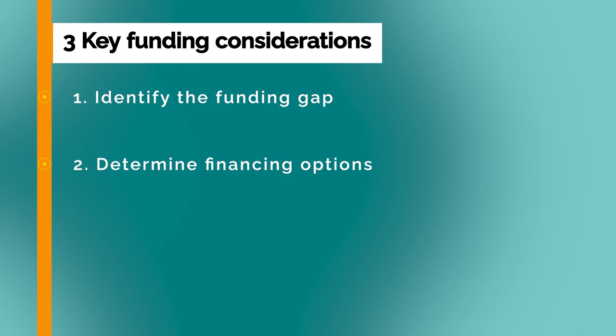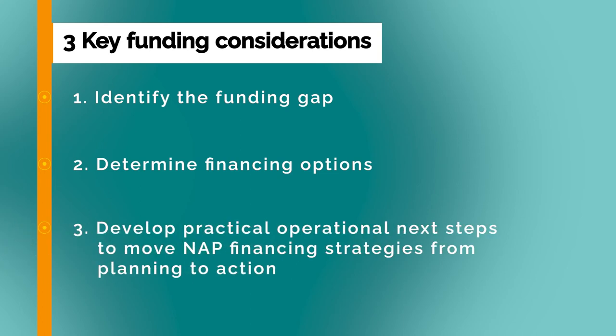Number two, determine financing options taking into account your national circumstances and whether it is possible to combine different sources of funding to meet your needs. The diversity of climate adaptation financing options will depend on the country's current state of development, existing bilateral and multilateral agreements, and the existence of national and regional adaptation programs. Number three, develop practical operational next steps to move NAP financing strategies from planning to action. These steps could include policy reforms, strengthening institutions and coordination mechanisms, developing proposals, capacity building, and establishing systems to monitor and track adaptation funding.